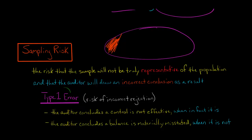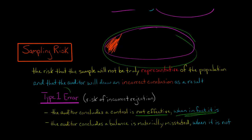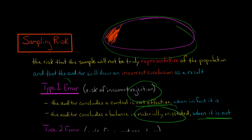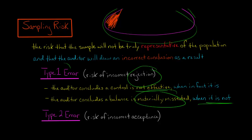When we're dealing with controls, a type 1 error means you're saying the control is not effective, when in fact if you could see the entire population, you would decide the controls are fine. And when we come to substantive testing — like accounts receivable — you're concluding that the balance is materially misstated when it in fact is not. You're rejecting when you should be saying everything is fine, but you're inferring that there's a problem.